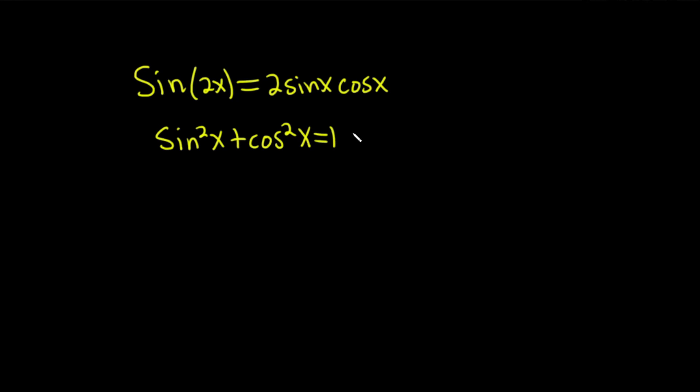Then you have sine squared x plus cosine squared x equals 1. From this one, there's two others you should memorize. Watch this. So sine squared x is equal to 1 minus cosine squared x. And cosine squared x is equal to 1 minus sine squared x.